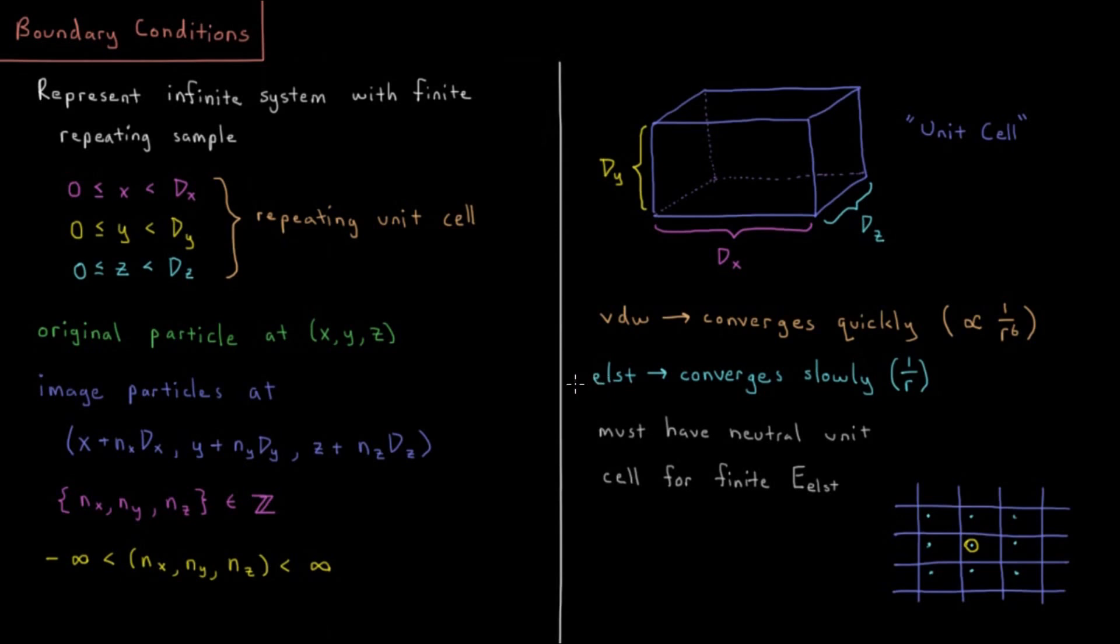The problem is electrostatics. That converges very slowly. It decays as 1 over r. Then you can imagine the number of image particles that you get as you have an expanding sphere around you. The number of image particles is going to expand cubically. So you have r cubed divided by r, so this is why if you have a net charge in your system, you're going to get an infinite electrostatic energy.